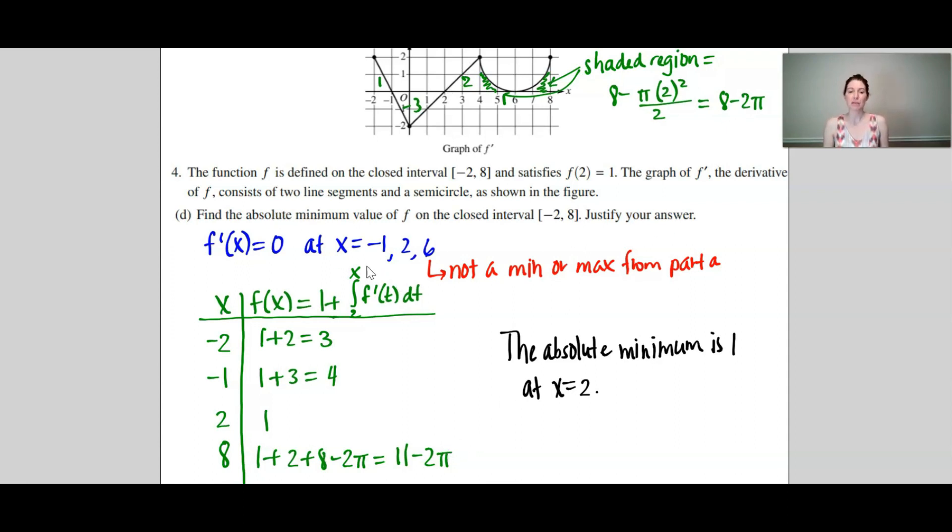Now we were looking for the absolute minimum value. Looking at these numbers, I can see the minimum is right here of 1. And that occurs at x equals 2.